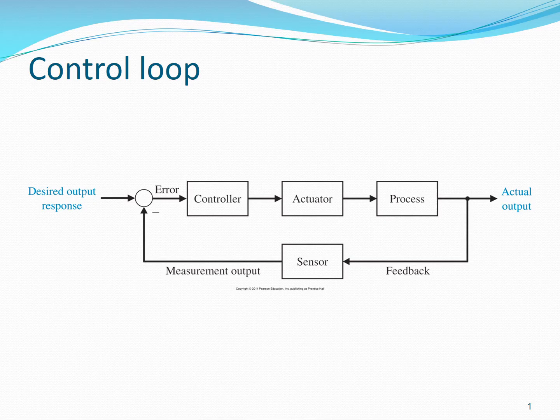These control systems can be represented in a block diagram as shown in the figure. In this diagram, the process to be controlled is represented by a block — it has an input and an output. When we talk in terms of control systems, the output is the variable that is to be controlled and the input is the variable through which we control the output.